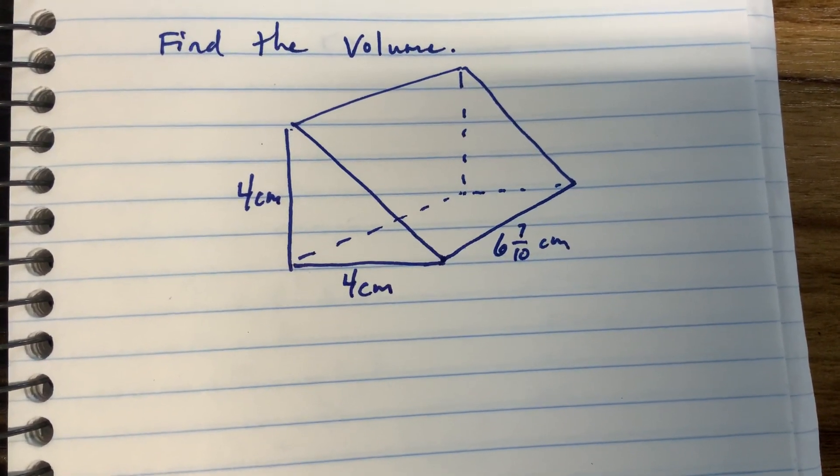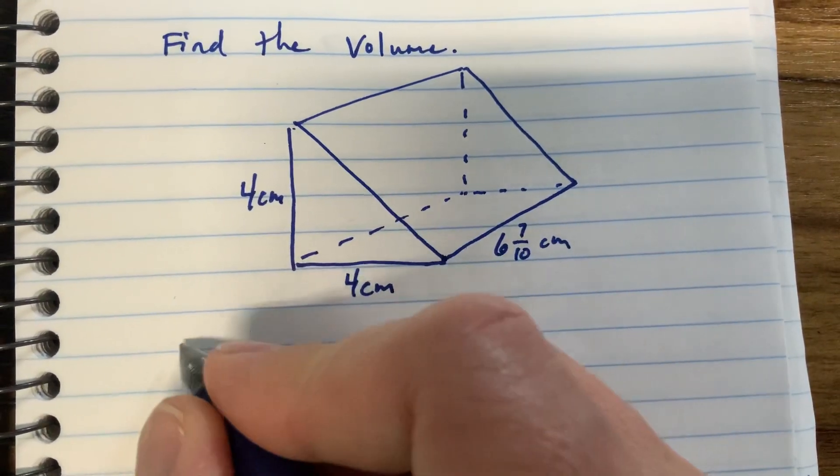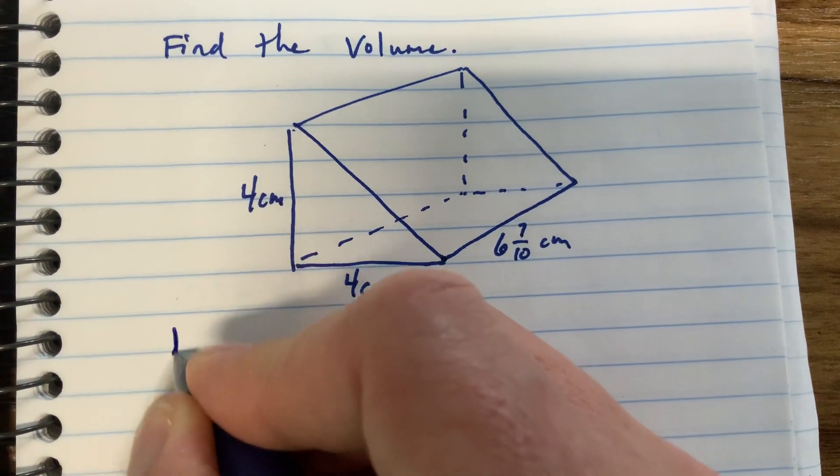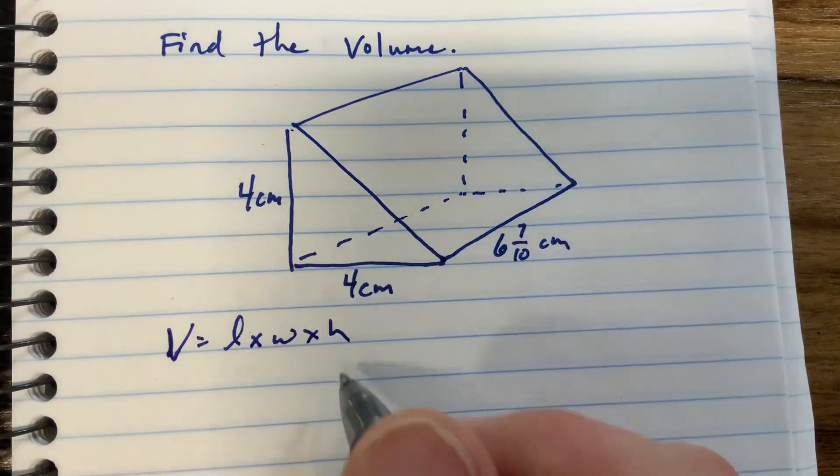Okay, for our next one, we're finding the volume of this triangular prism. So volume of a prism is usually length times width times height, and we're going to be doing the same thing here, but we have a triangle.